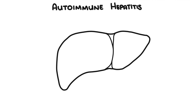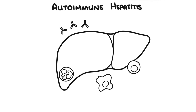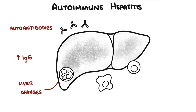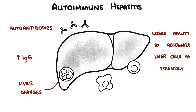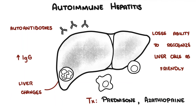In summary, autoimmune hepatitis is a rare liver disease caused by the immune system mistakenly attacking the liver cells — the hepatocytes. It is characterized by the presence of certain autoantibodies in the blood, increased levels of immunoglobulin G, and specific changes in liver tissue on biopsy. It is believed the disease occurs when the immune system loses its ability to recognize liver cells as friendly. Treatment with steroids and/or azathioprine is effective.